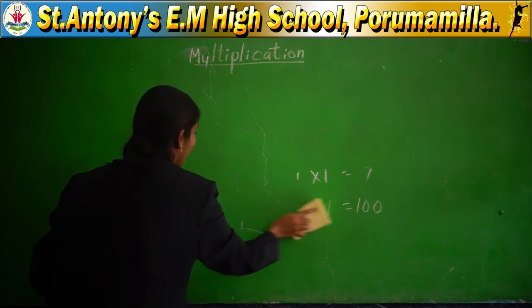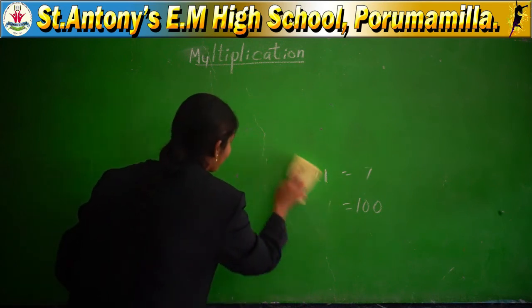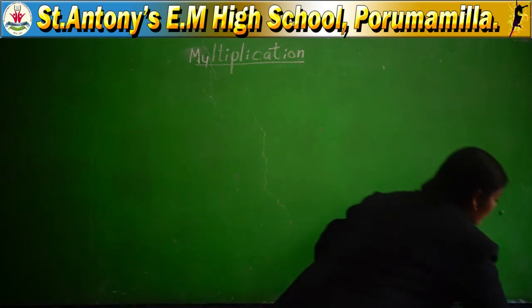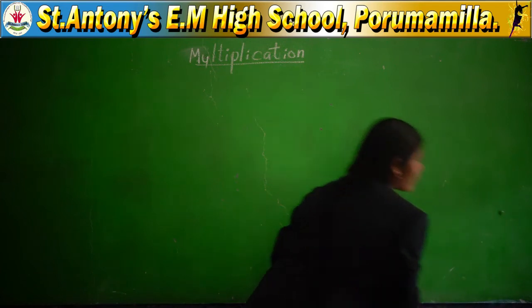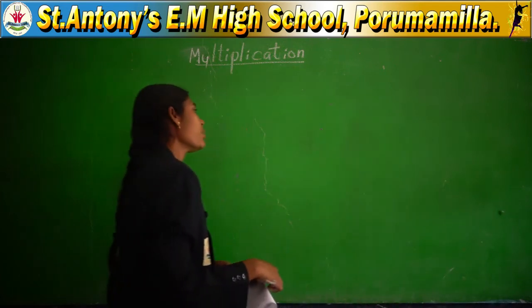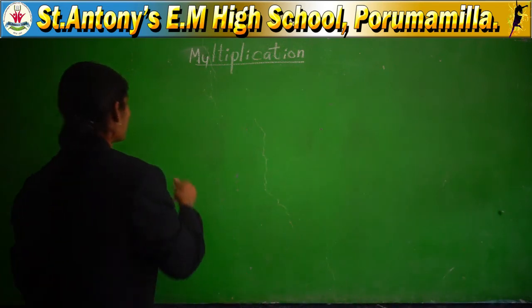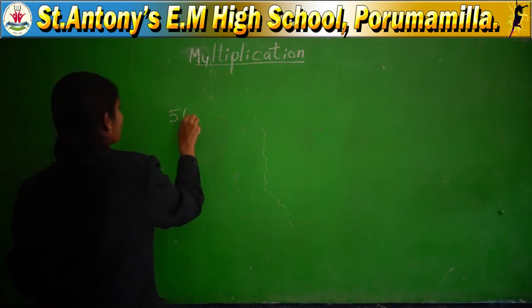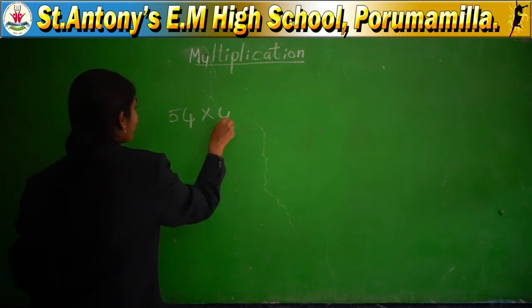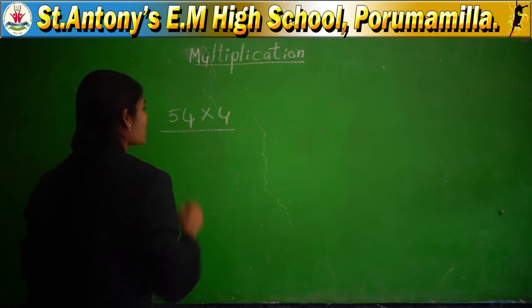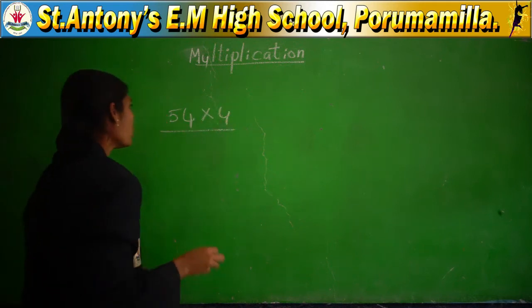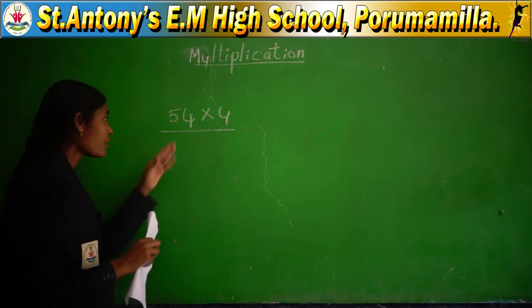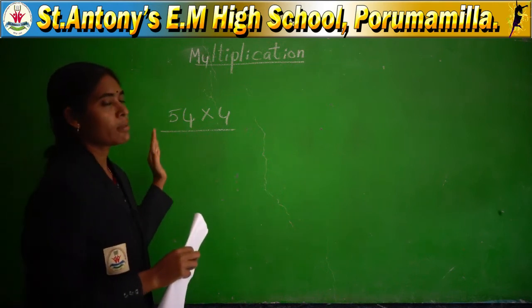Now I will explain multiplication with single digit, double digit, and triple digit examples. Take 54 into 4. Already you know — first start from the 1's place.